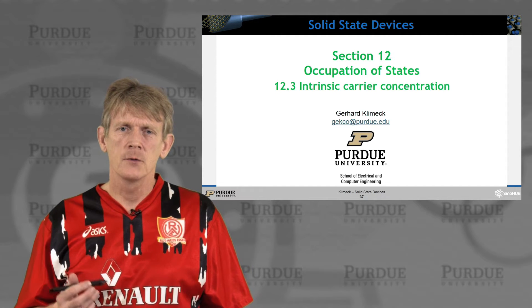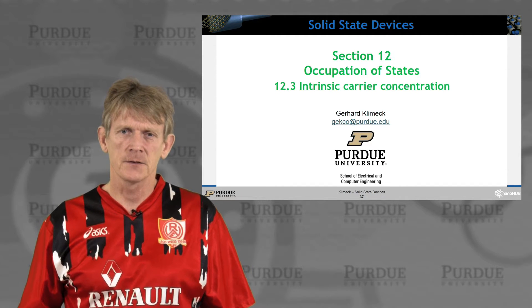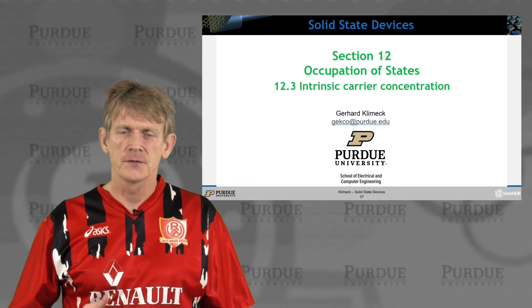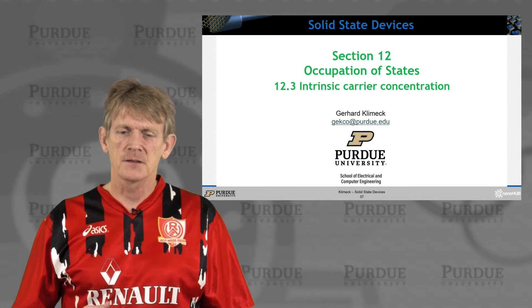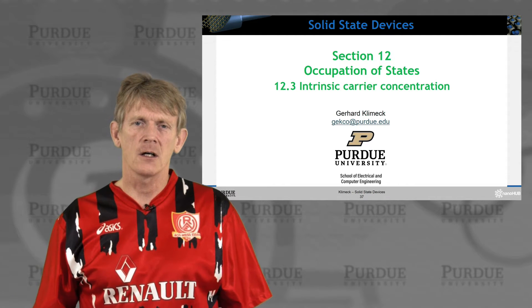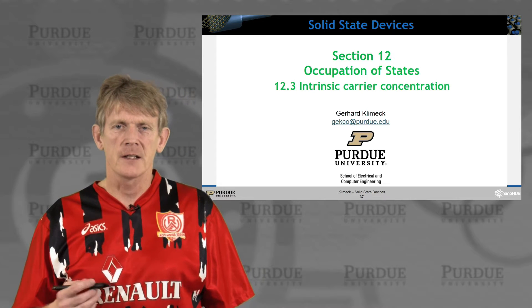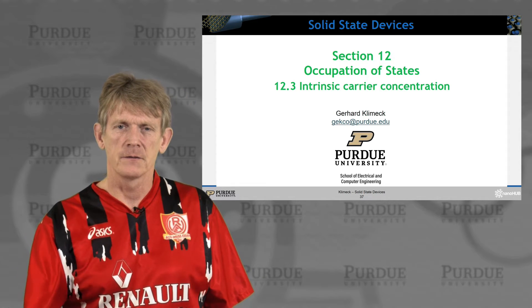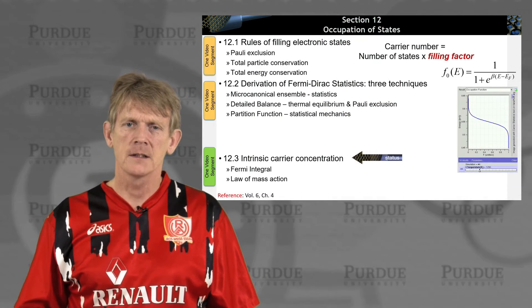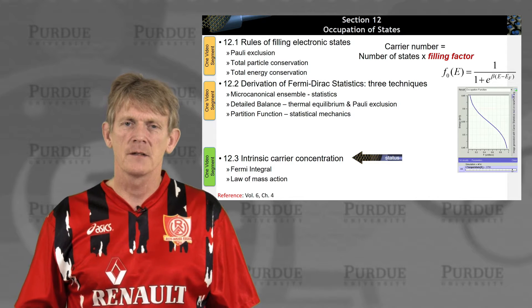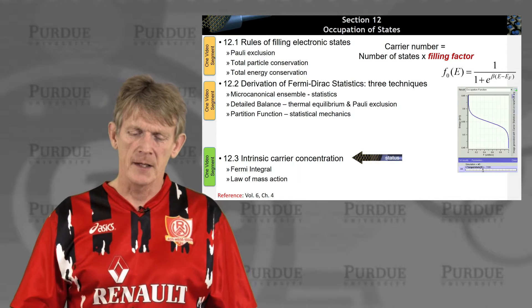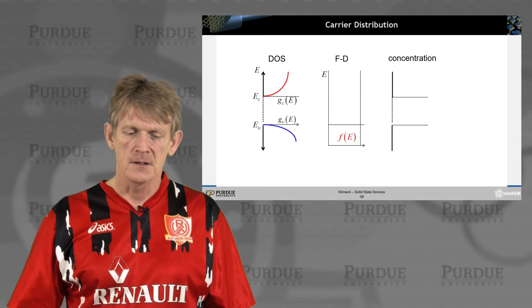Alright, so here we go. We're going to look at intrinsic carrier concentrations of states that are not specifically doped, and we're looking at the occupancy of naturally occurring semiconductors. So, we'll need to derive a Fermi integral and the law of mass action.